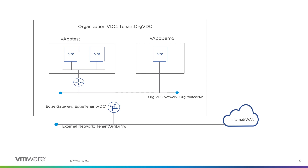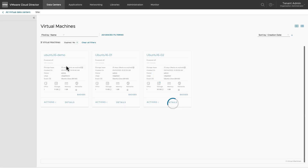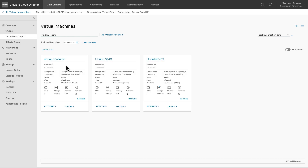An isolated network can be used to provide connectivity between certain VMs or vApps which need to be separated from the rest of the machines in the vDC. Let's create an isolated network.